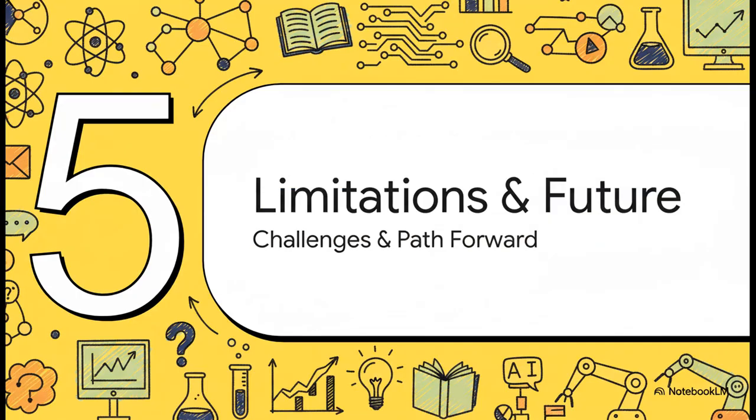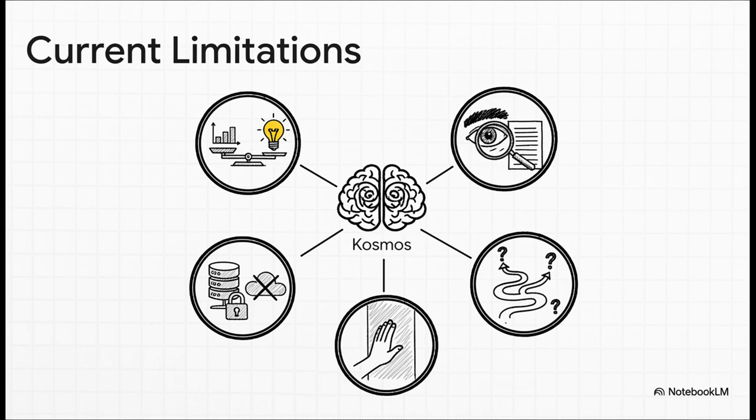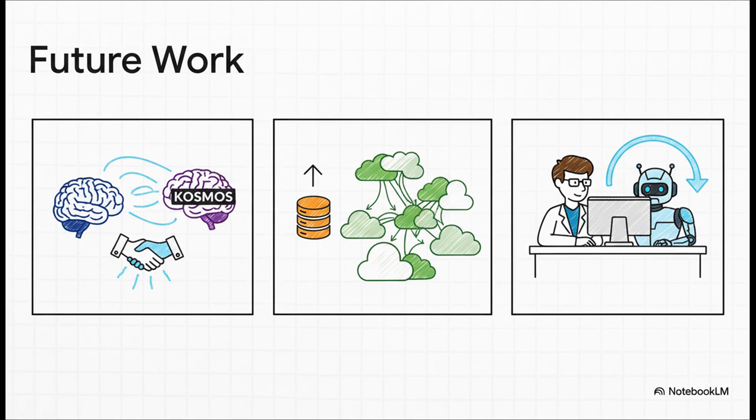Despite these results, the system does have several limitations. The key limitations include interpretation, as the system can conflate statistical significance with scientific value. Consequently, identifying valuable discoveries still requires a time-intensive process involving domain experts. There are also technical constraints, such as a 5-gigabyte dataset limit. Furthermore, due to stochasticity in the process, independent runs may not converge on the same discovery, and the system currently lacks a scientist-in-the-loop capability for real-time guidance.